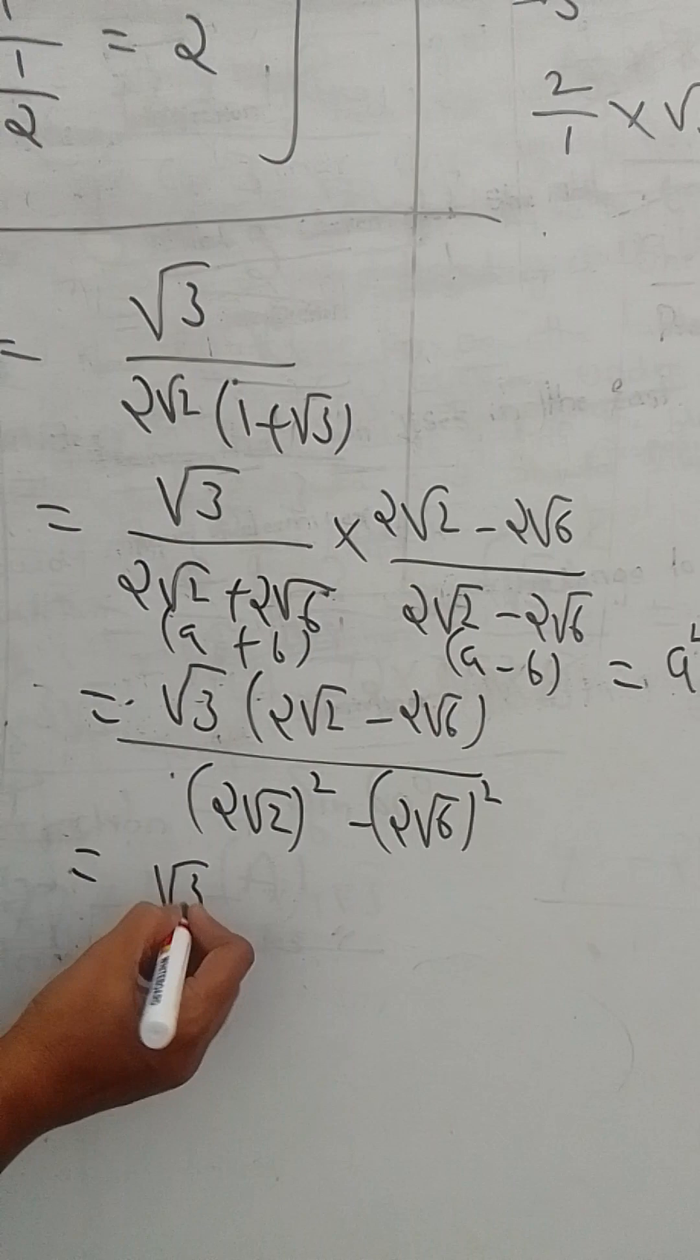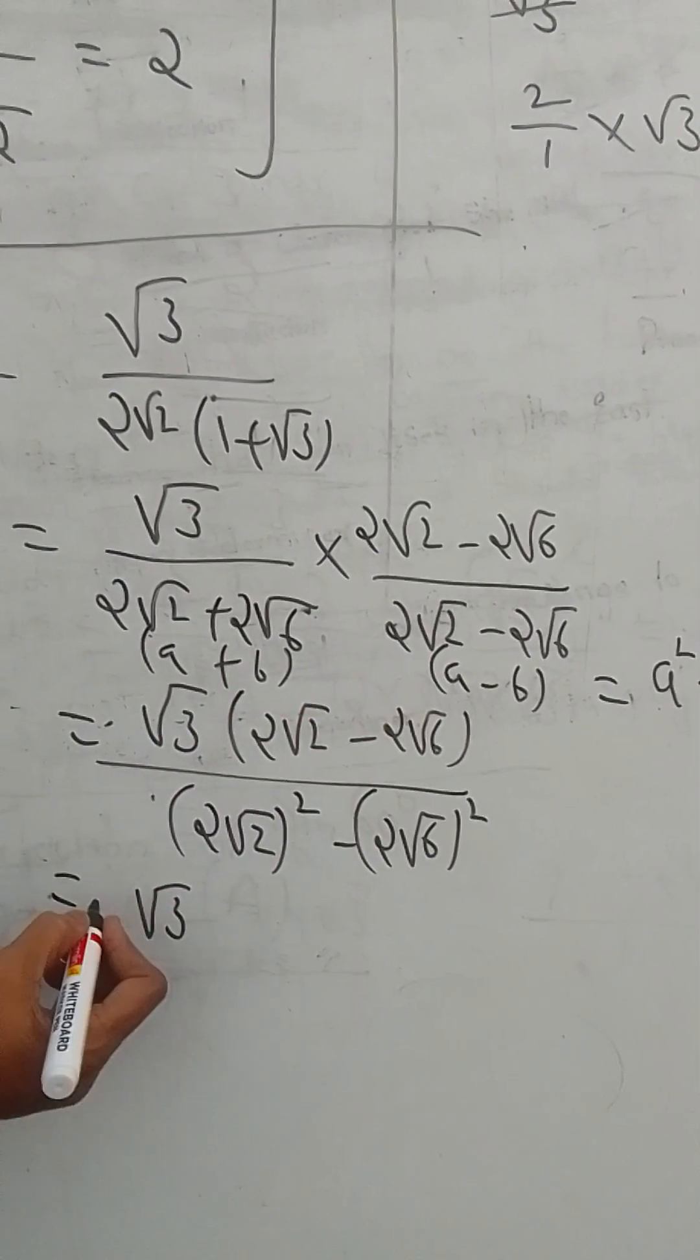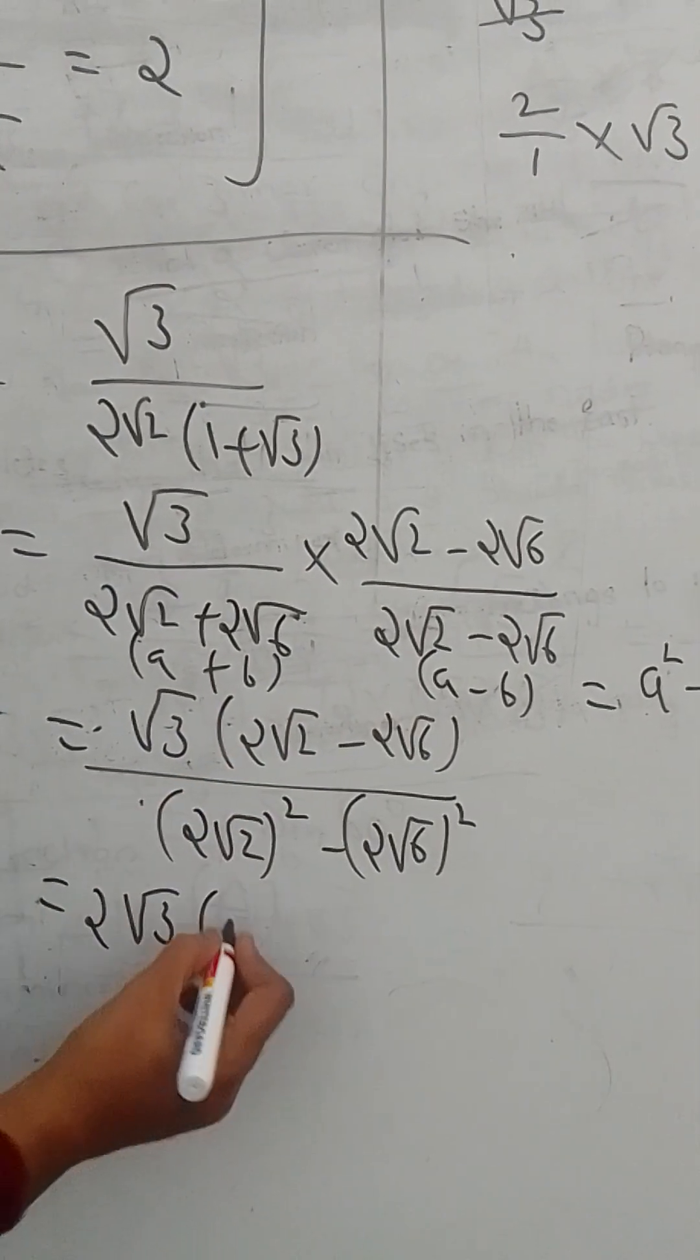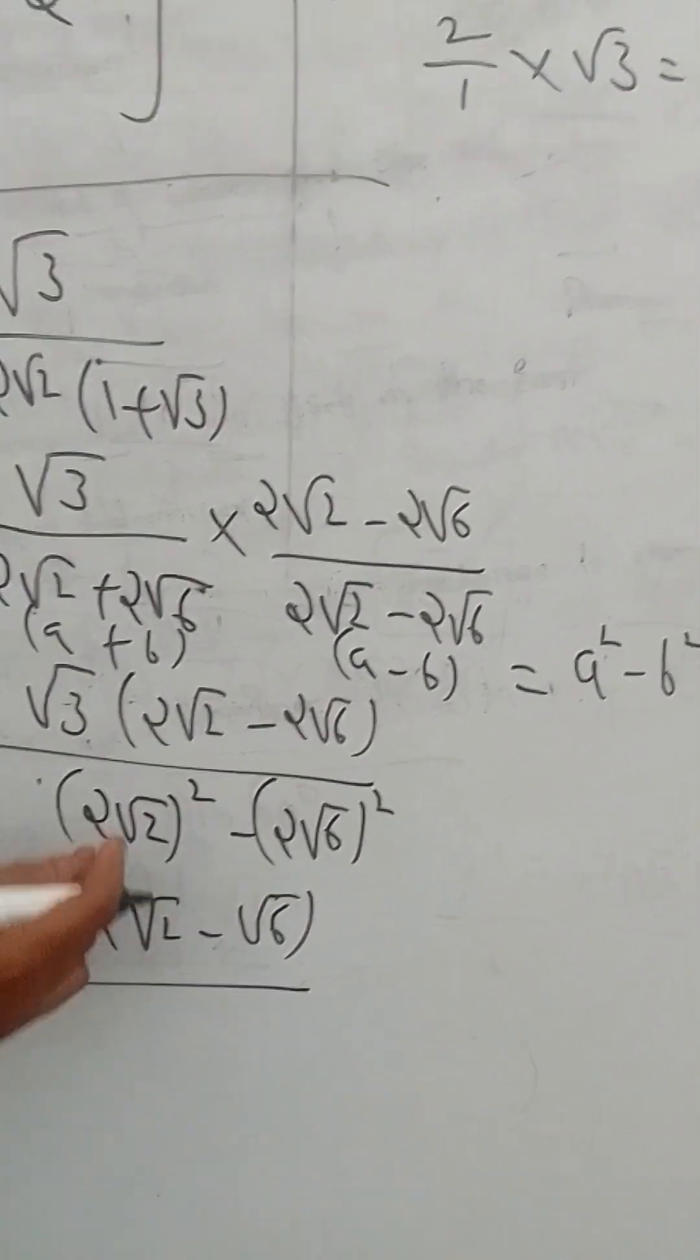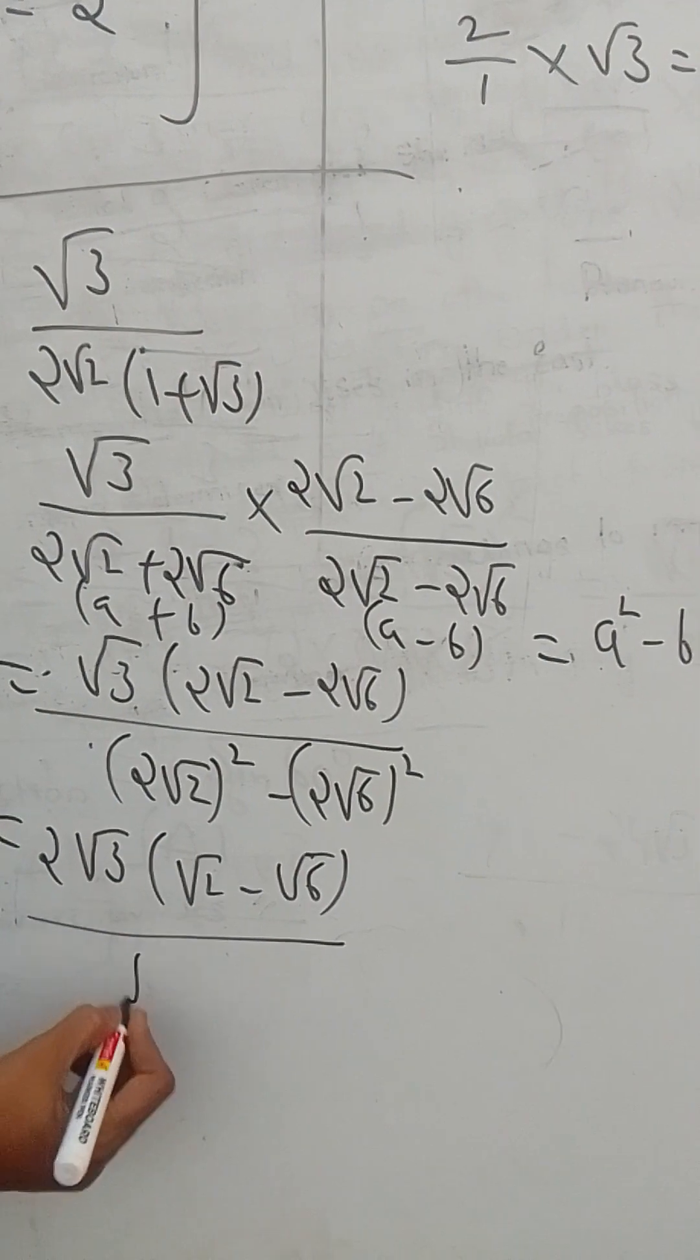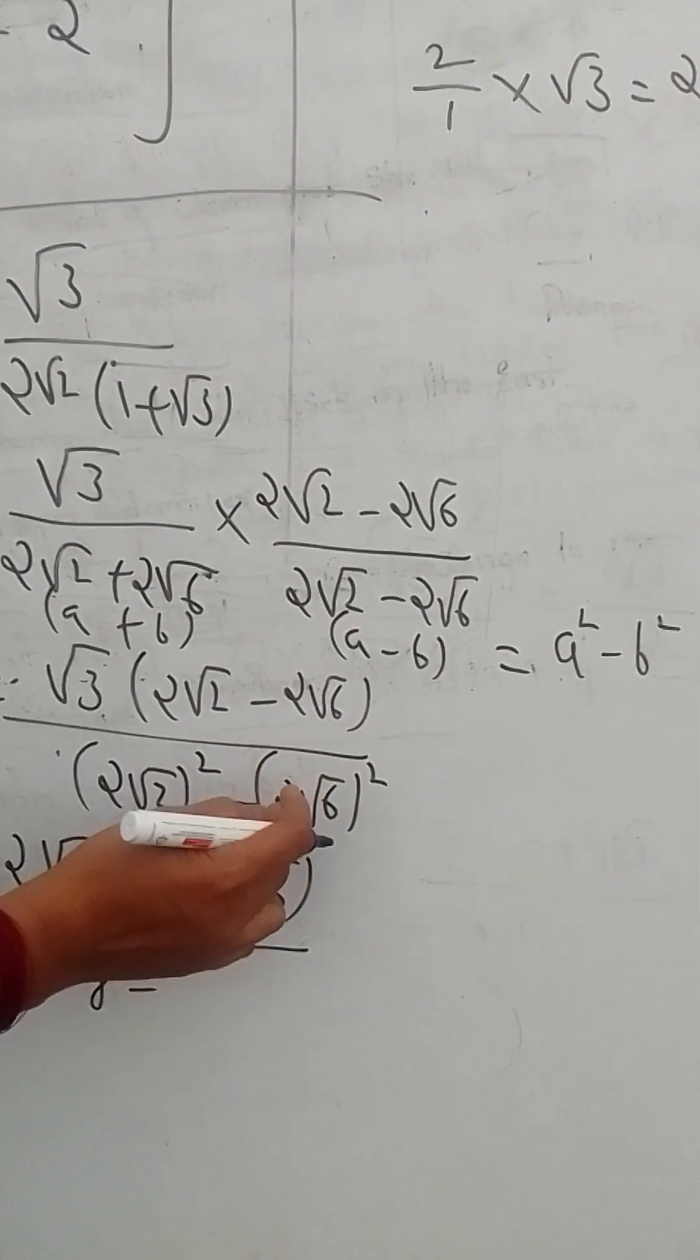Root 3 into, here 2 is common, 2 root 3 into root 2 minus root 6 by 2 square means 4, 4 times 2 is 8 minus 2 square is 4, 4 times 6 is 24.